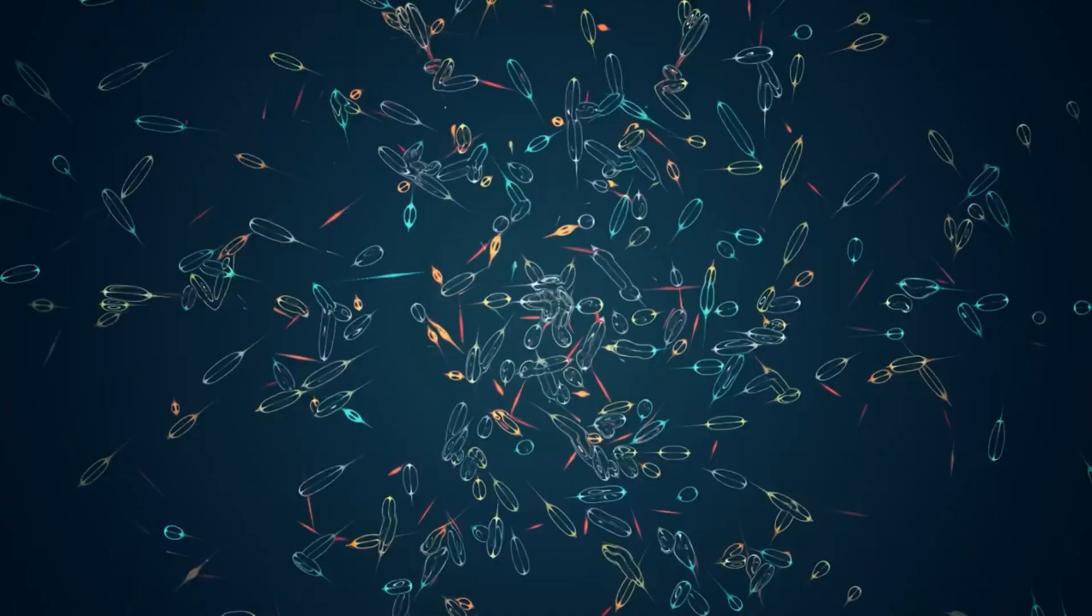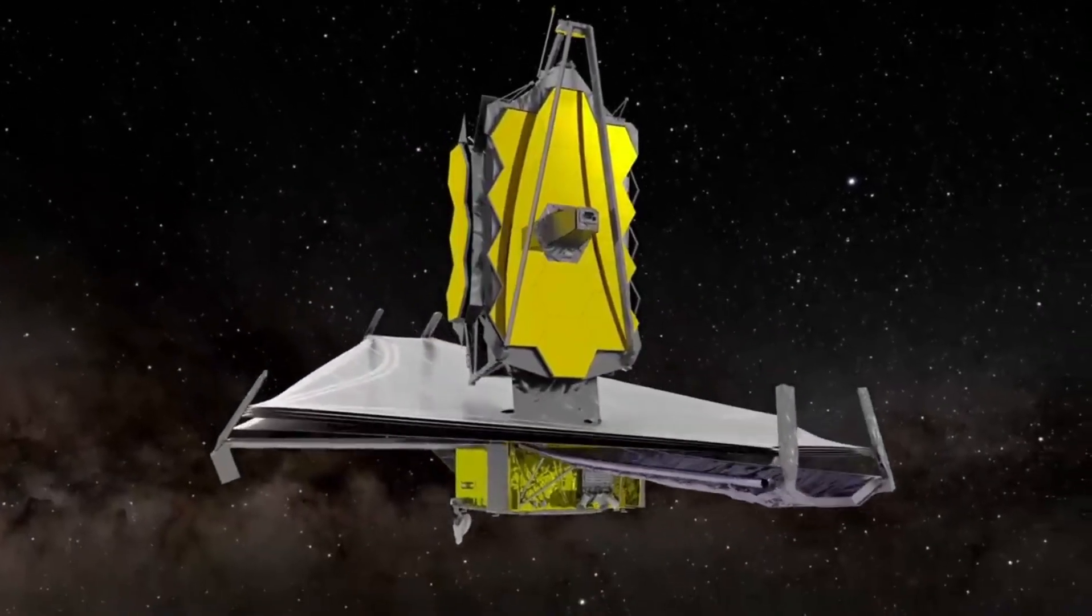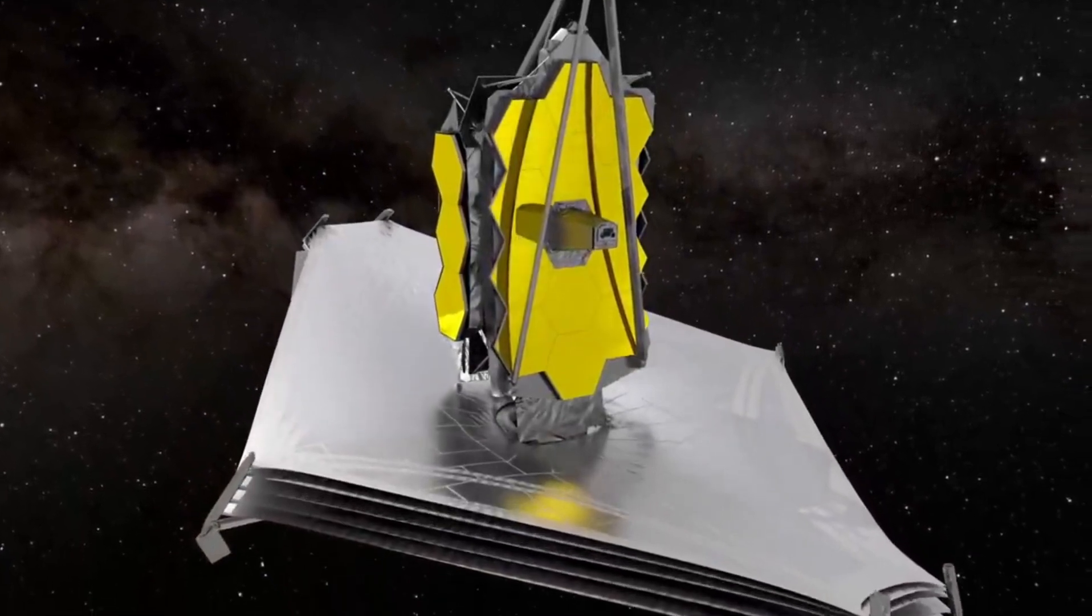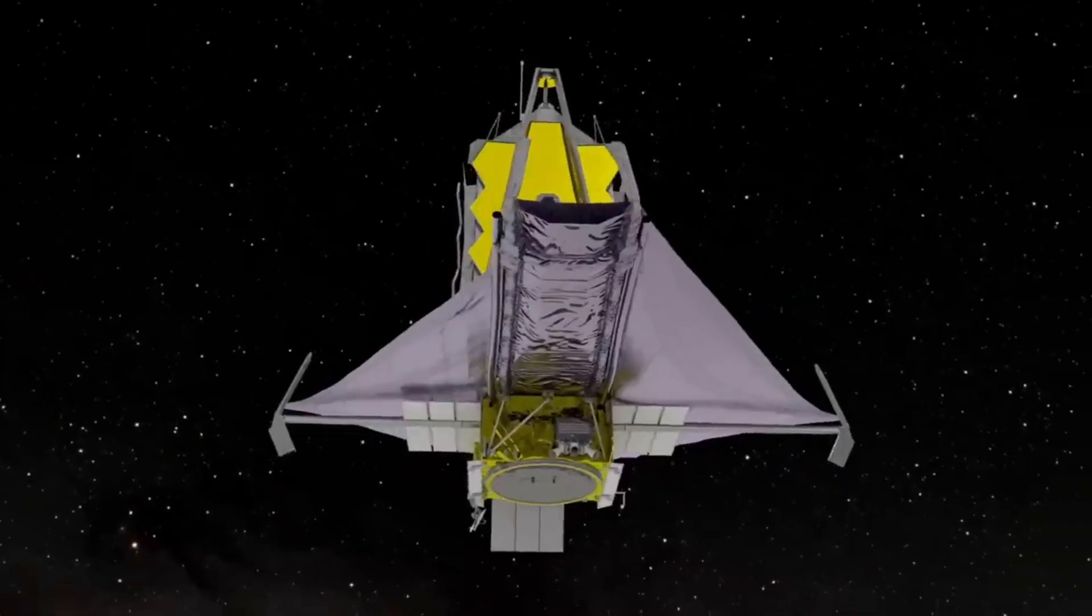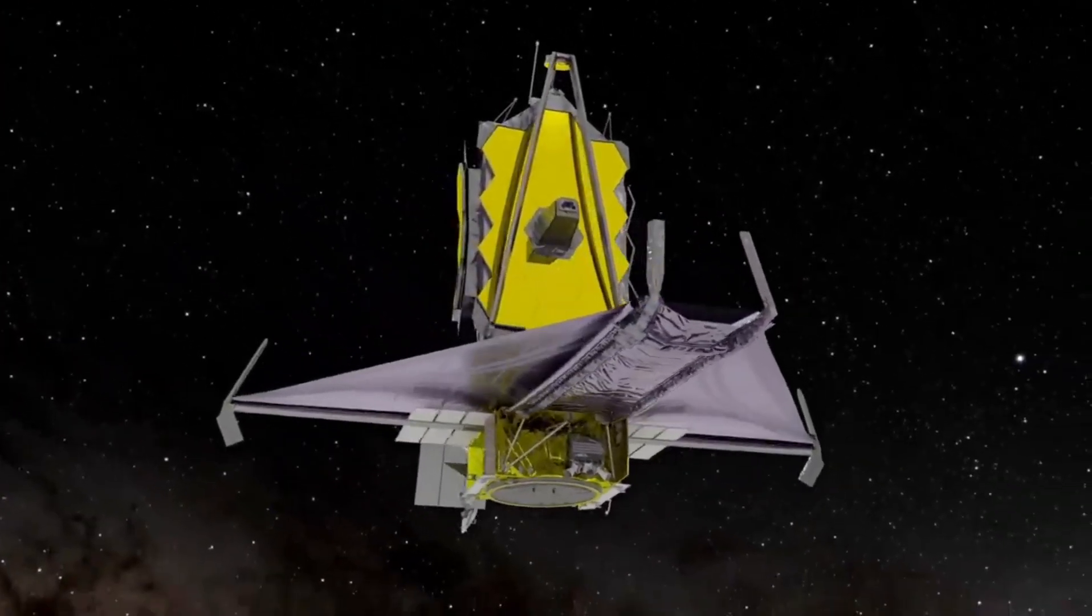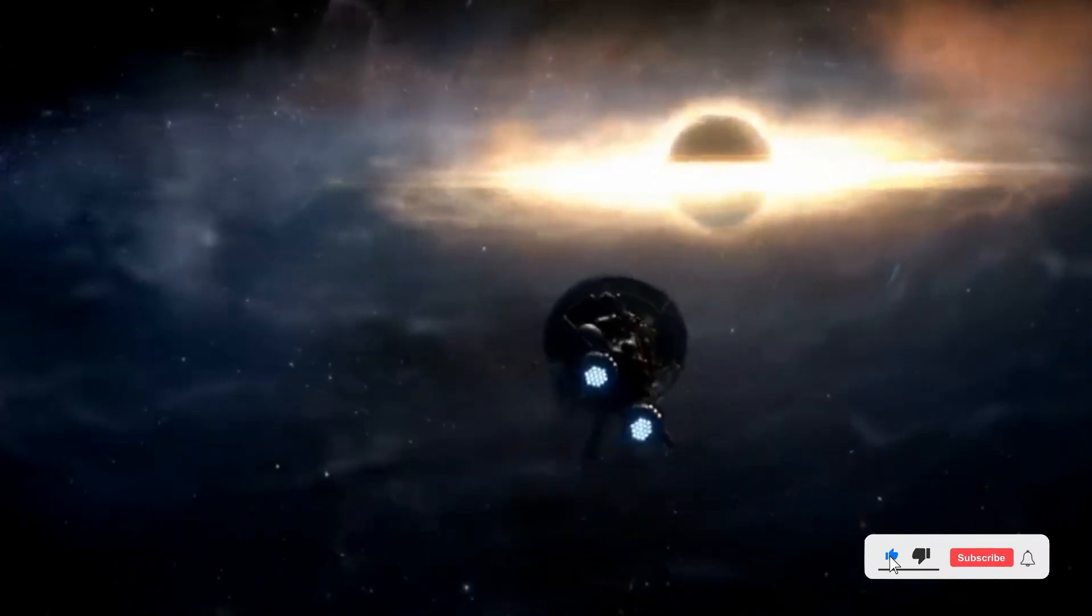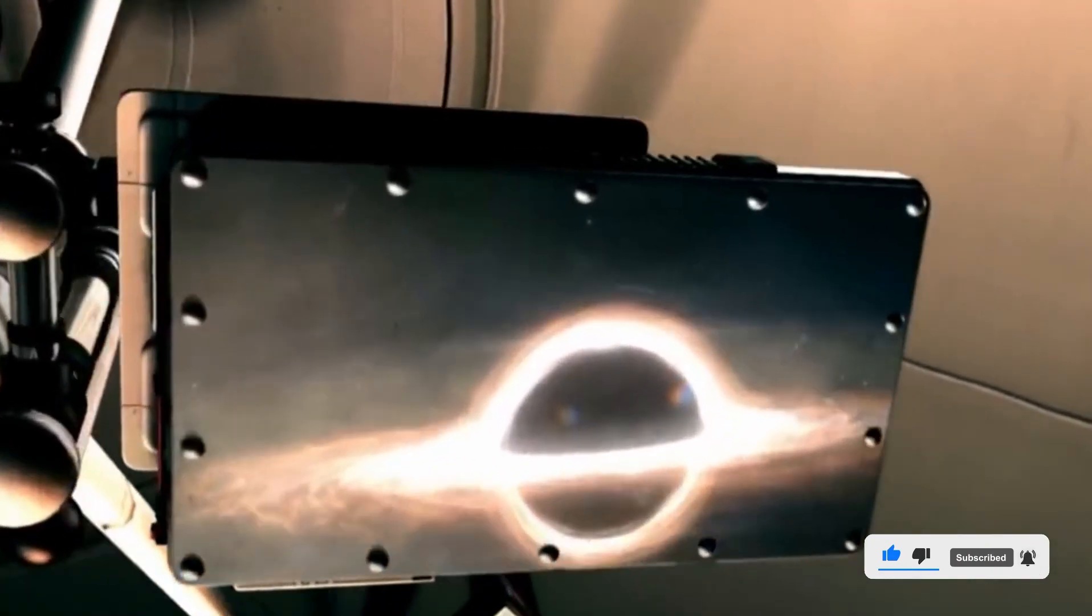The telescope ascended into the sky aboard the powerful Ariane 5 carrier rocket from the European spaceport in French Guiana. The choice of the Ariane 5 and the Guiana location was strategic, as the rocket's quality and the equatorial launch site facilitated the swift and efficient delivery of the several-ton object to the distant second Lagrange point L2, over 1 billion kilometers from Earth.